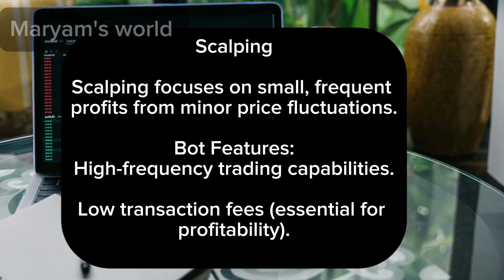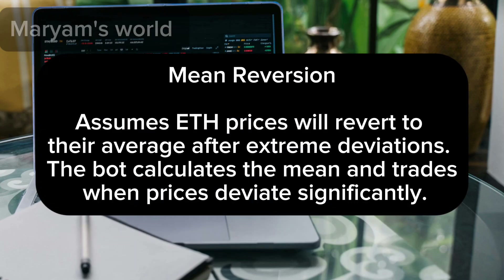Scalping focuses on small, frequent profits from minor price fluctuations. Bot features include high-frequency trading capabilities and low transaction fees, which are essential for profitability. Mean reversion assumes ETH prices will revert to their average after extreme deviations; the bot calculates the mean and trades when prices deviate significantly.